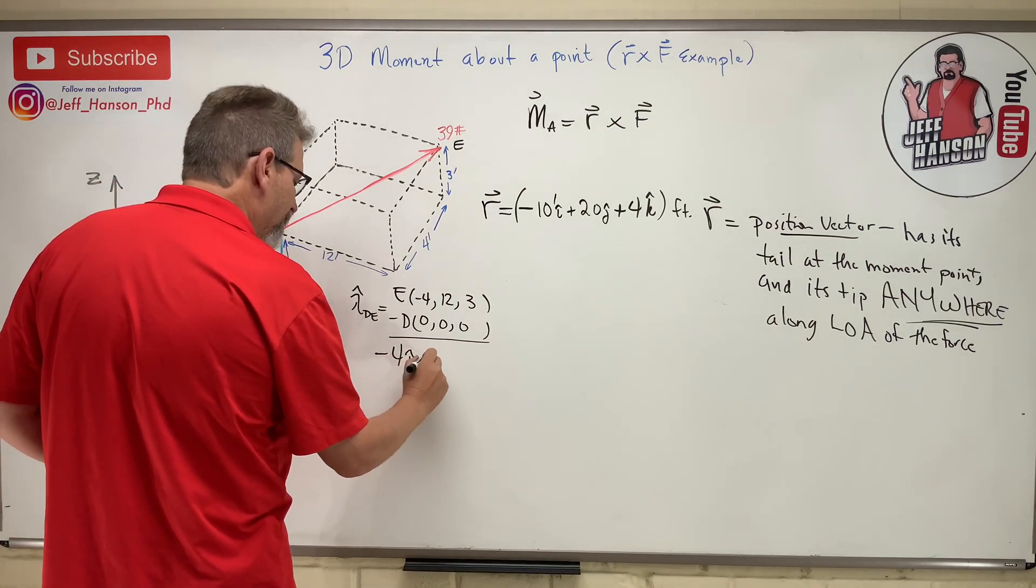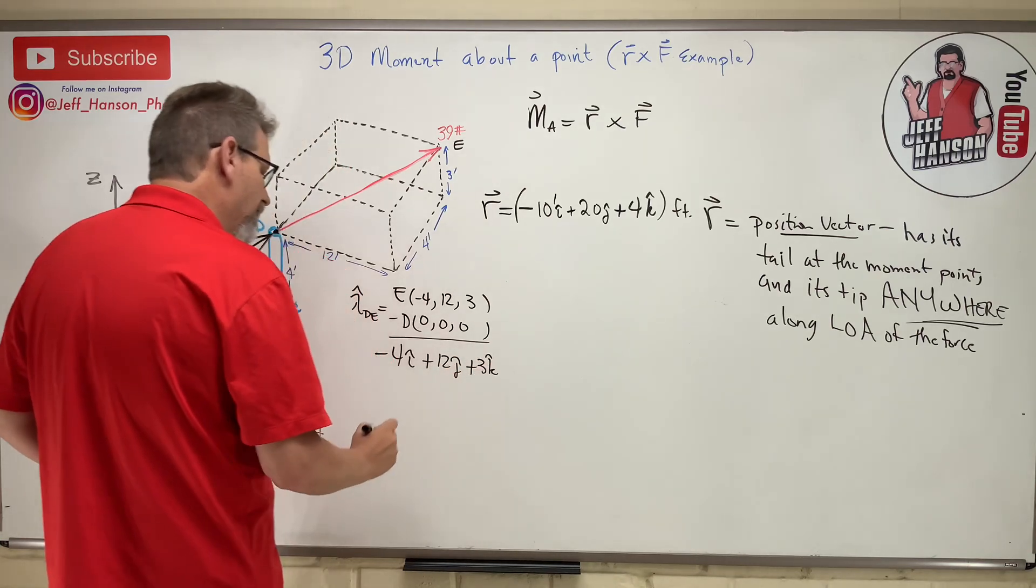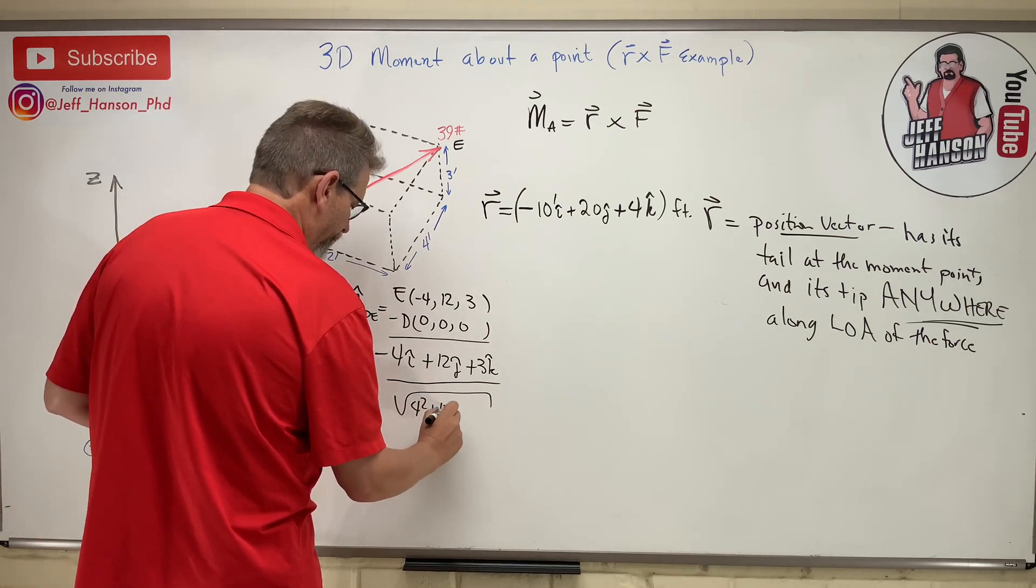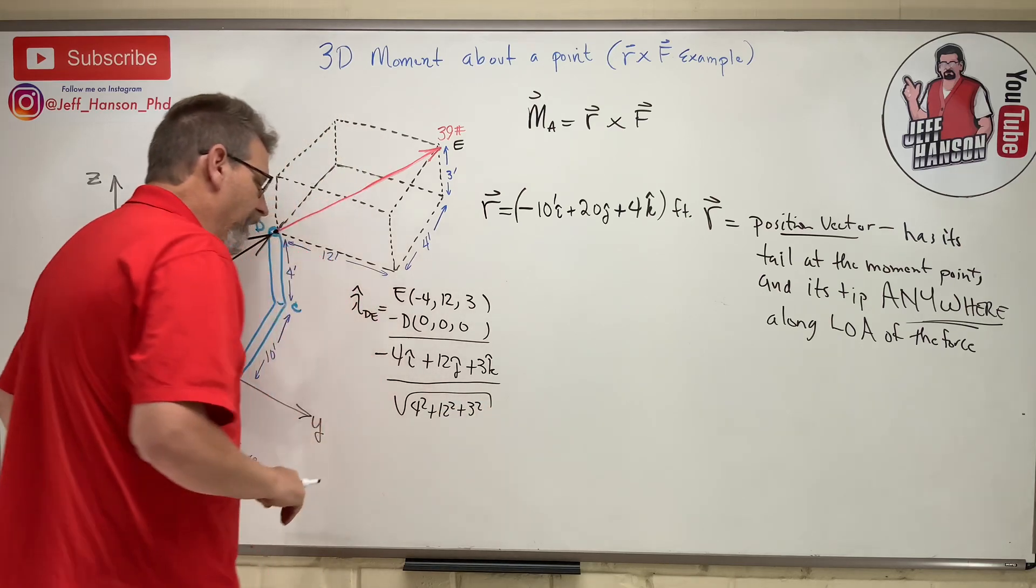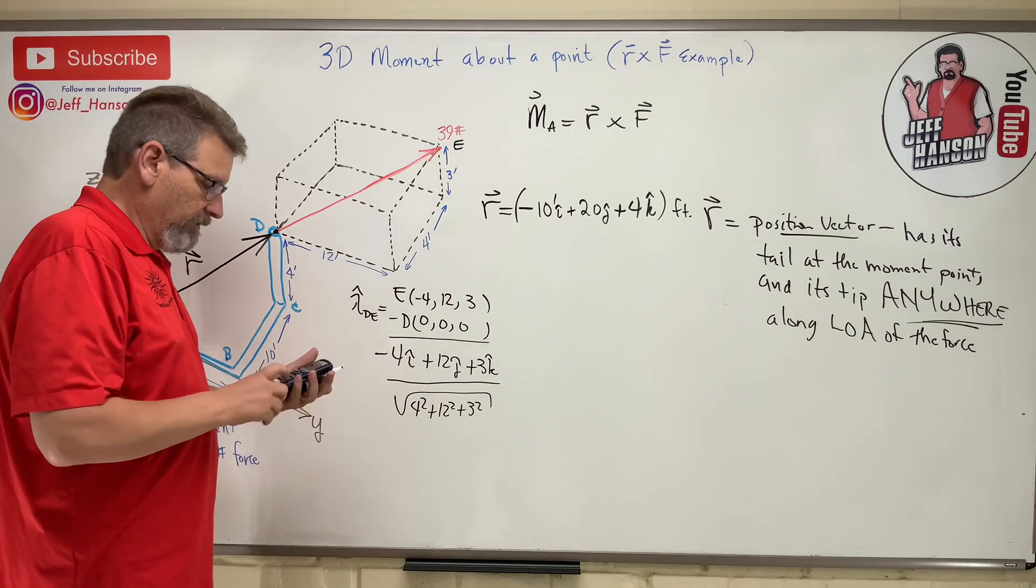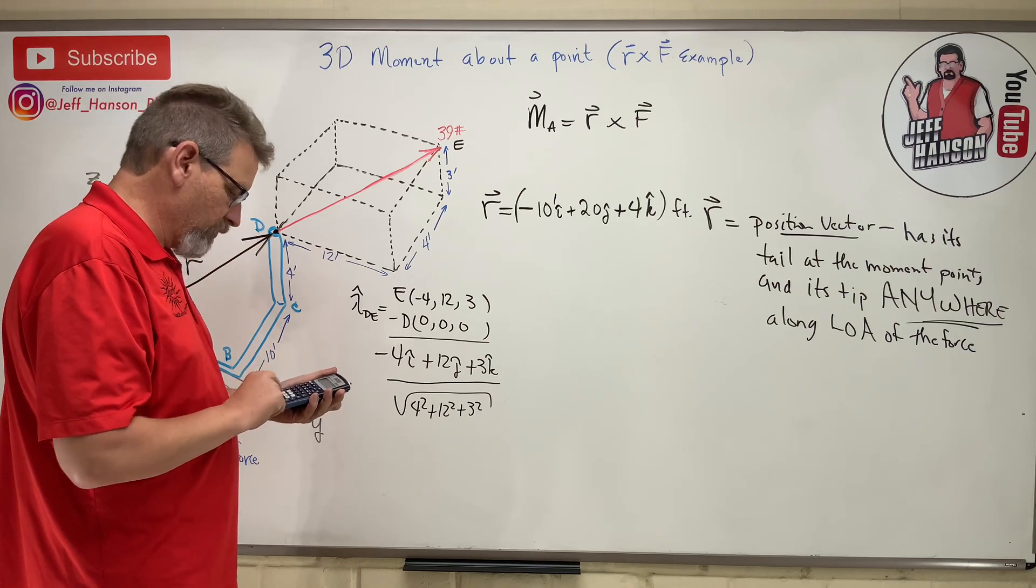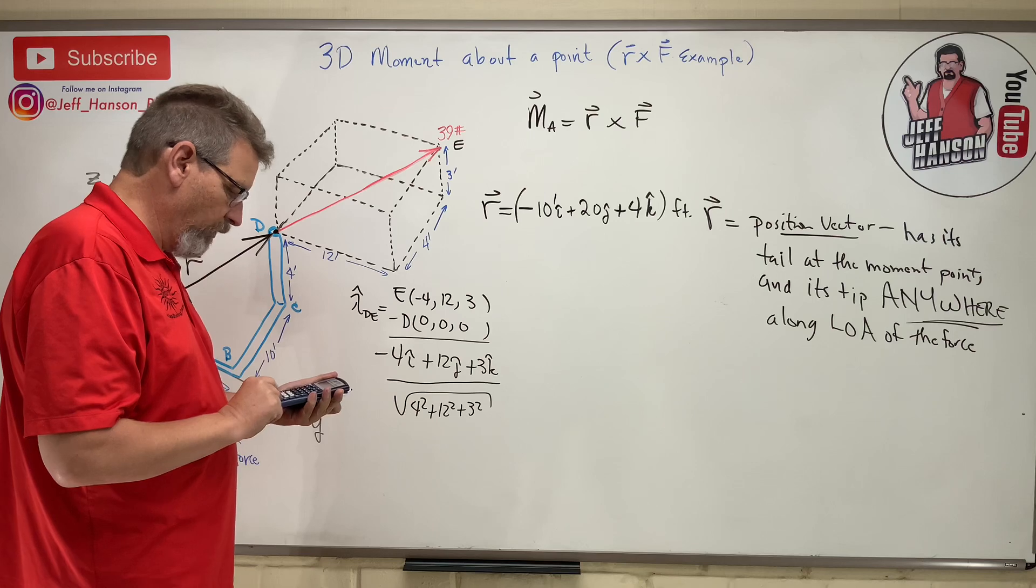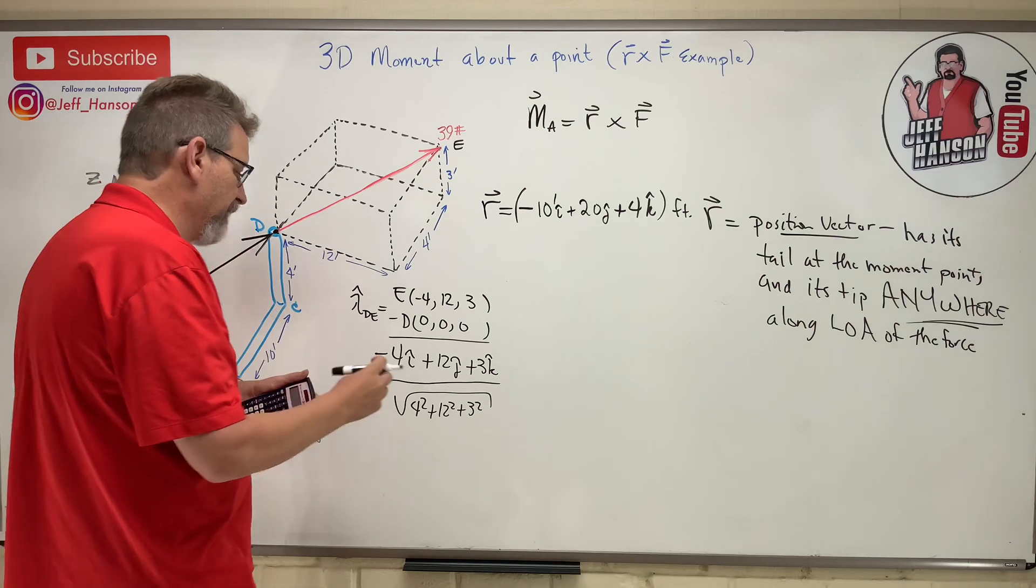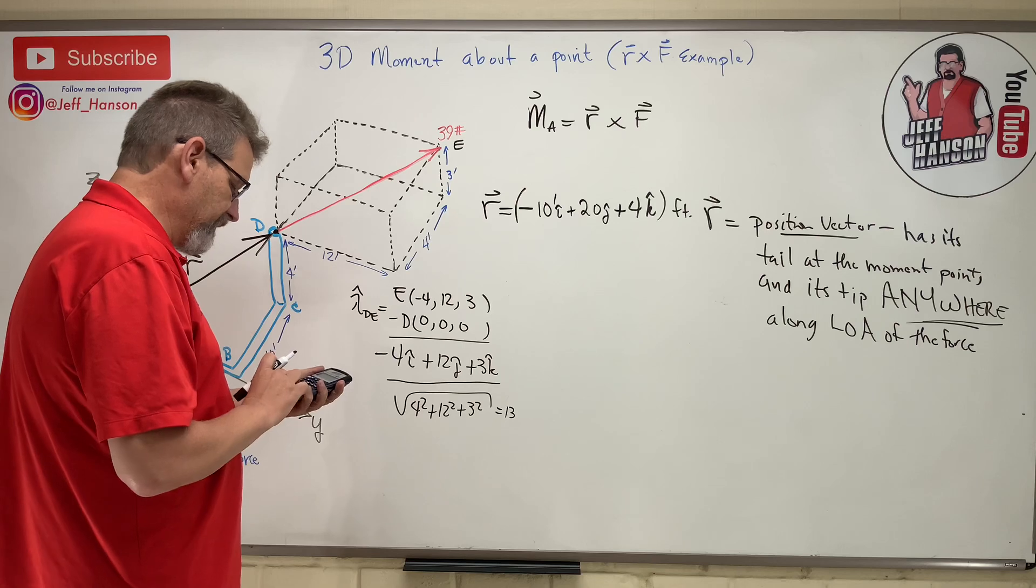That's not lambda though, that's not one. I've got to divide it by its magnitude. Let's give my handy dandy calculator a try here. Let's see, 4 squared plus 12 squared plus 3 squared equals, square root equals 13. Lucky 13.